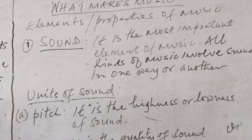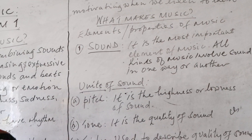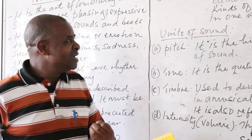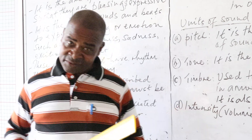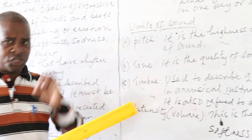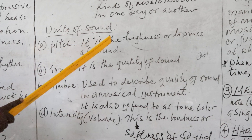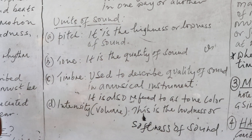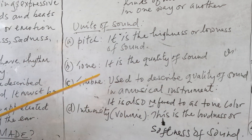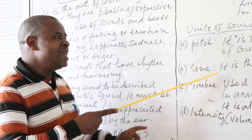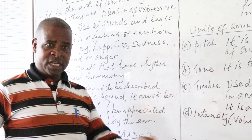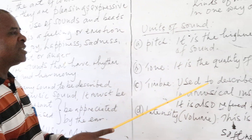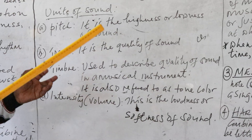Sound is the first property of music, and then we come up with the others. Sound being the very important element of music, it has units. I want us to look at the units of sound. The first unit is what we call pitch — pitch is the highness or lowness of sound. The second unit of sound is what is described as tone — tone is the quality of sound. The third unit of sound is timbre, which is used to describe the quality of sound in a musical instrument.